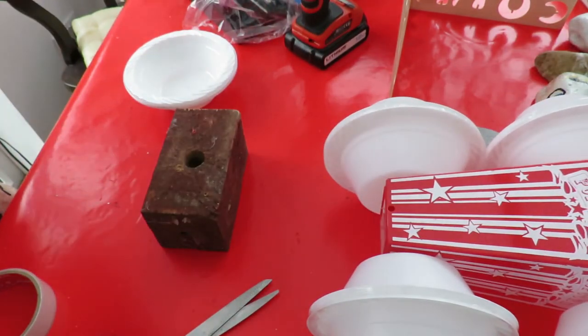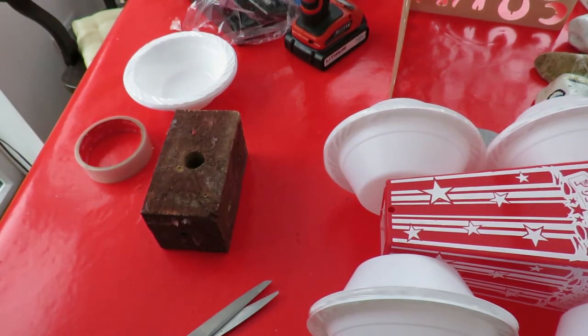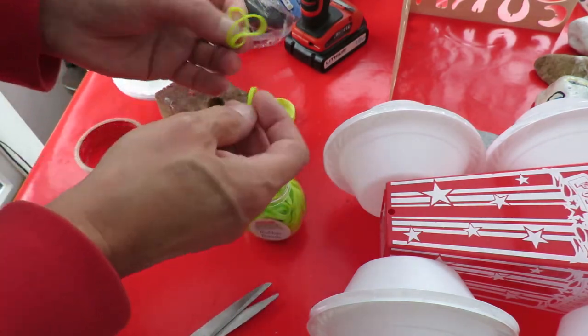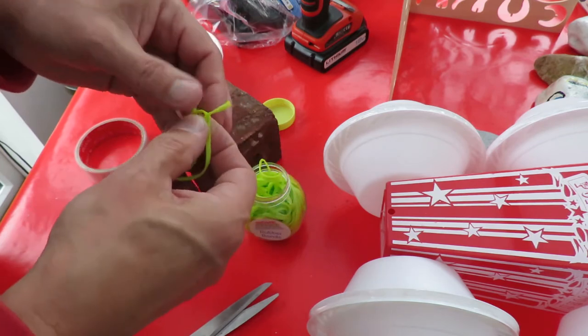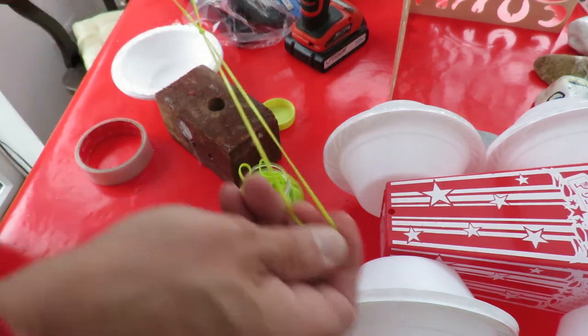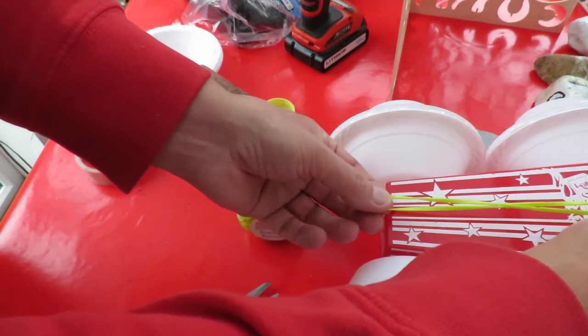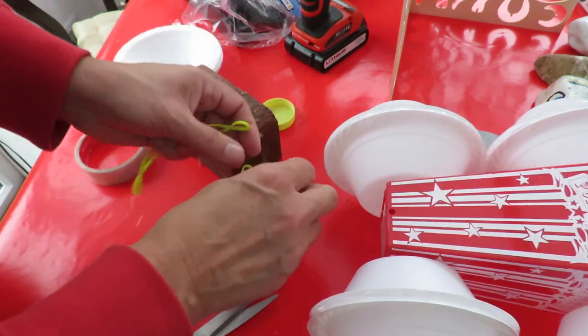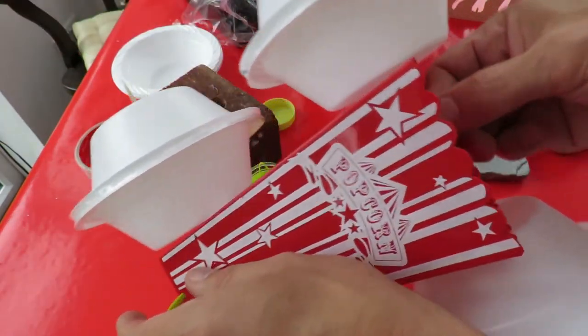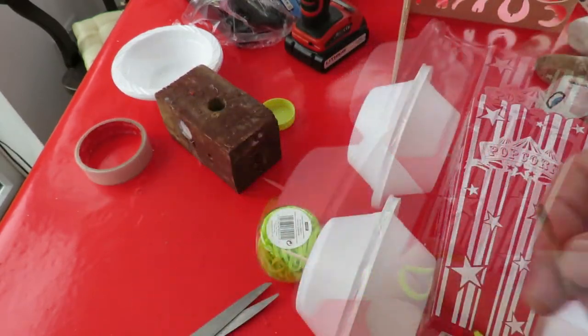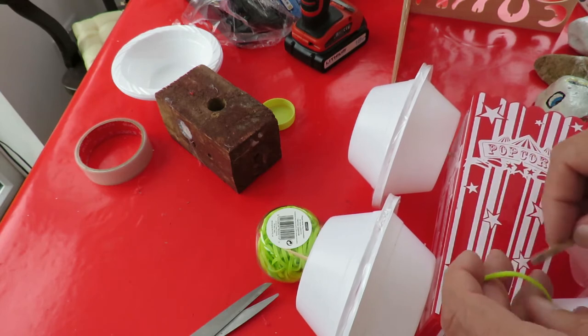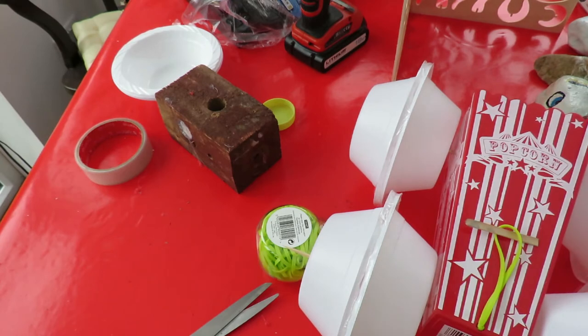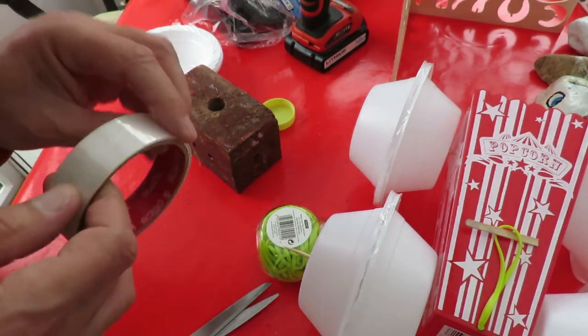Alright, need some rubber bands. Alright, these ones came from Poundland. Two is probably enough but I'll do it with three. I think two is enough just as a temporary measure. I'll put that on there and tape it in place so we can adjust it if we need to.